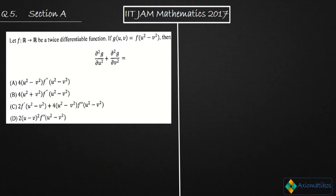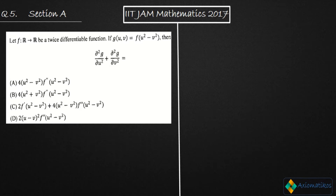Hello students, welcome to ExeoMatic course. This video is part of the solution series for IIT JAM Mathematics 2017. We are going to solve problem number 5 of your question paper. This problem is from the topic differential calculus and it is a very easy problem, totally dependent on one result known as the chain rule. I will show you that result and using it we will solve this question quickly.